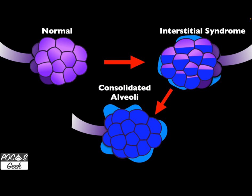A normal alveolus should be aerated — an open sac of air. As we progress to interstitial syndrome, both the alveoli and interstitial tissue between them start to fill with fluid, and we begin to see B-lines. If the process continues and alveoli become completely filled with fluid, we develop a consolidated area of the lung, which is what produces the irregular pleural line finding.